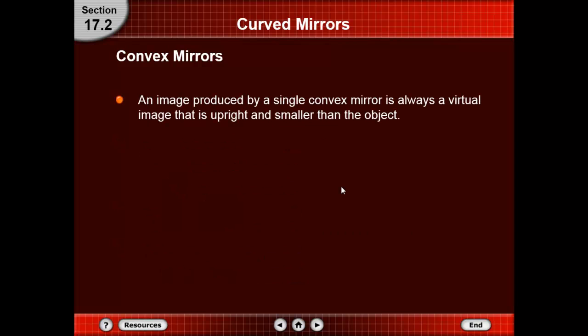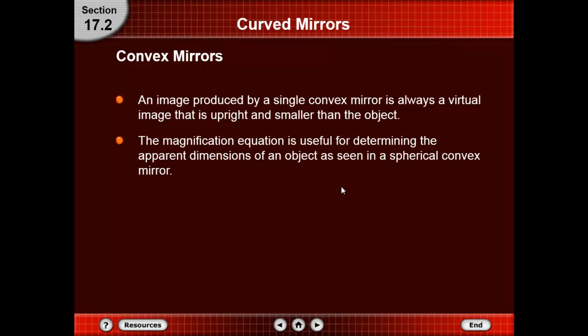An image produced by a single convex mirror is always virtual, upright, and smaller than the object.